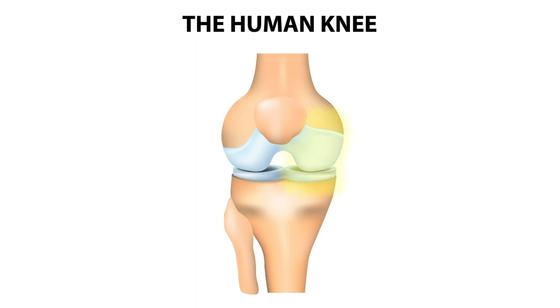There are three compartments in the knee: the medial compartment, located on the inner side; the lateral compartment, located on the outer side; and the anterior compartment, located in the front of the knee between the kneecap and the thigh bone.